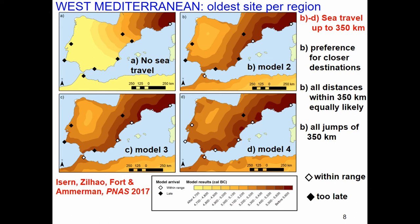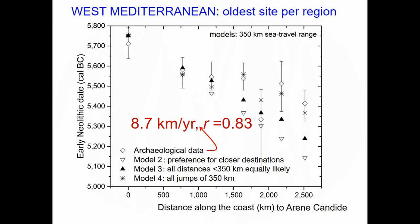Diamonds on the map indicate the earliest sites in each region. White diamonds mean the model front arrives on time; black diamonds mean it arrives too late for inland travel without sea travel. The model only fits the data if jumps per generation along the coast are at least 350 kilometers. In this case the coastal spread was much faster — about 8.7 km per year — far above the average of 1 km/year, likely due to long sea journeys.